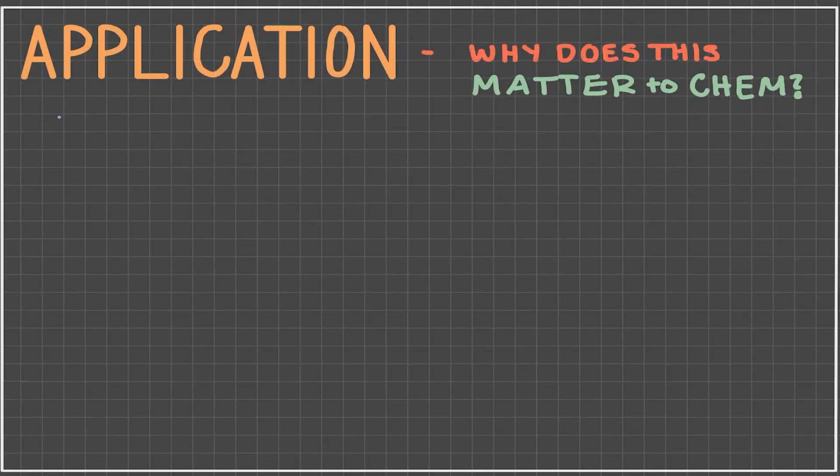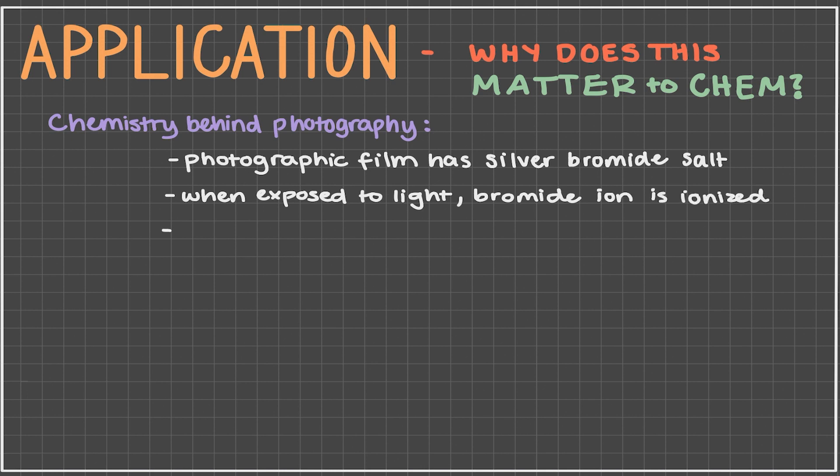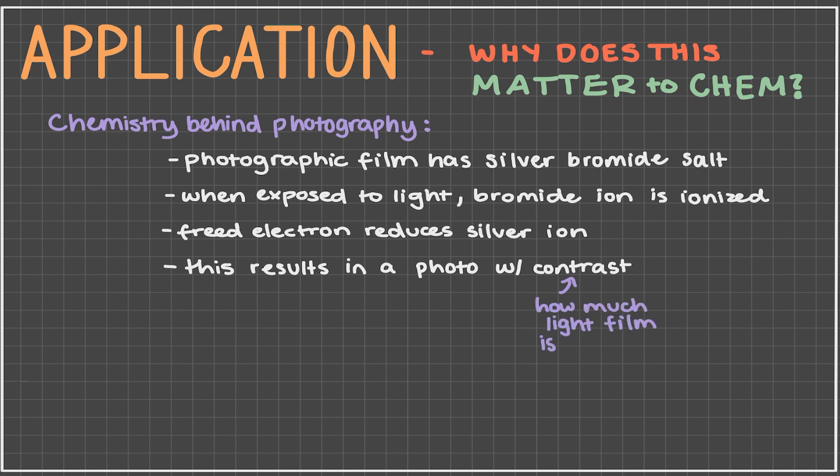Now, let's talk about something really cool. And that's the chemistry behind photography. Photographic film often contains silver bromide salt held in gelatin. When the film is exposed to light, the bromide ion is ionized, resulting in a freed electron that reduces a silver ion. Depending on how much light the film is exposed to, the amount of silver that's reduced will be directly affected. This is what makes a photo develop into a real image with contrast, and this contrast is created based on the differing amounts of light that the film is exposed to.